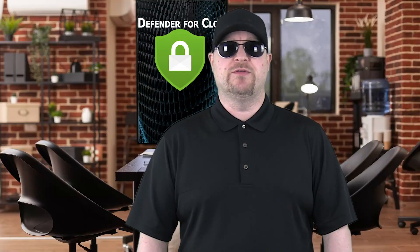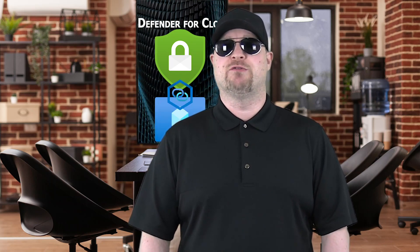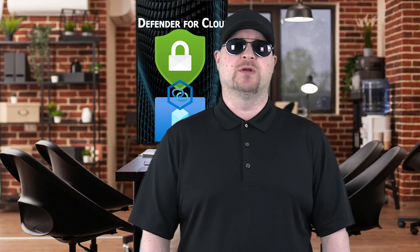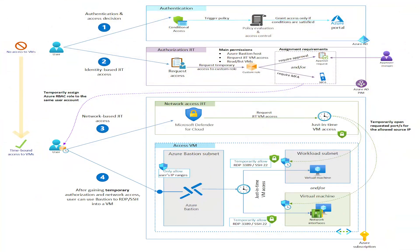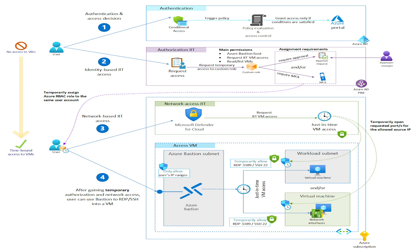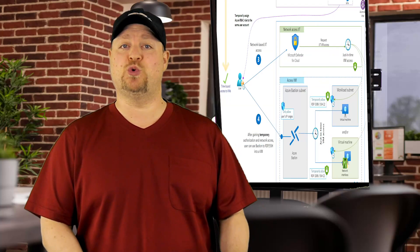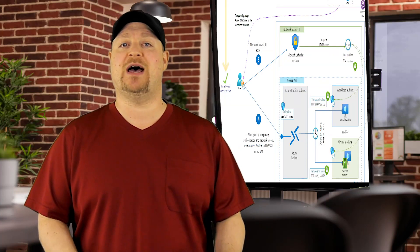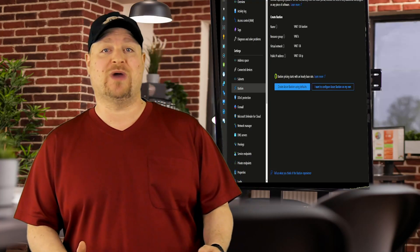How does that work exactly? JIT is a feature of Windows Defender that blocks management ports on VMs and requires a user to request access to open the ports. There's a graphic in the Azure Architecture Center that might help explain it more — that's linked in the video description. The setup can be a little tricky since you have two different tools controlling access at the same time, and the key is doing things in the right order.